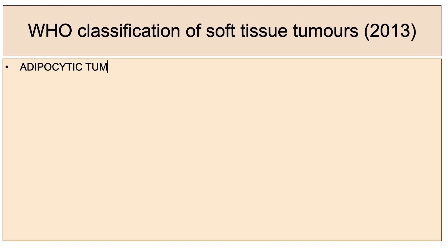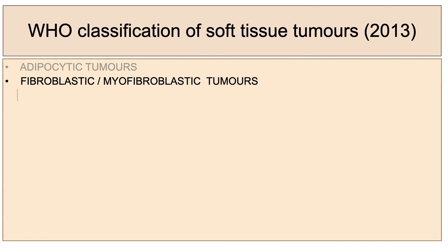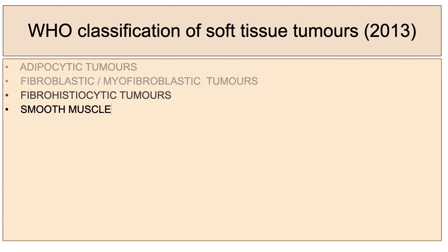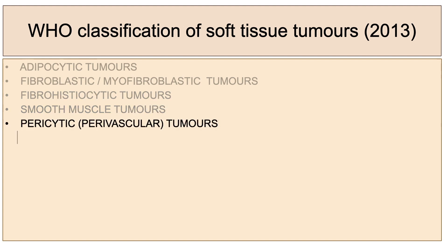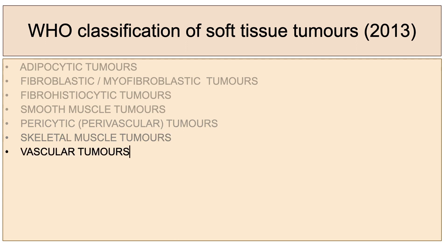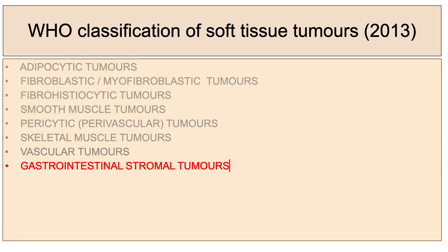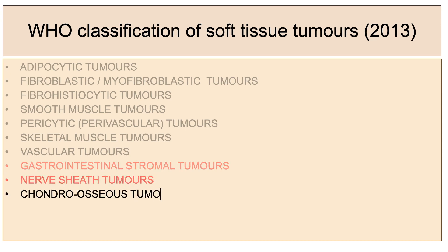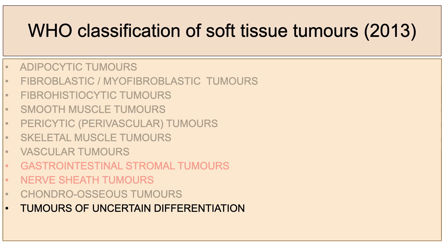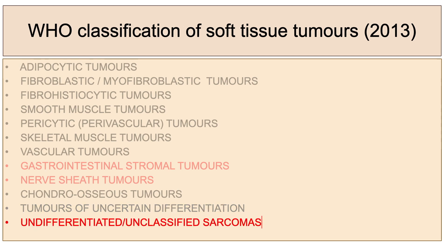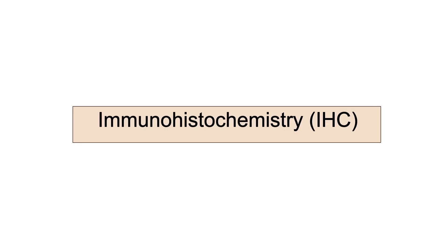The broad categories according to WHO classification are: adipocytic tumors, fibroblastic/myofibroblastic tumors, fibrohistiocytic tumors, smooth muscle cell tumors, pericytic/perivascular tumors, skeletal muscle tumors, vascular tumors, gastrointestinal stromal tumors, nerve sheath tumors, chondro-osseous tumors, tumors of uncertain differentiation, and undifferentiated or unclassified sarcoma.